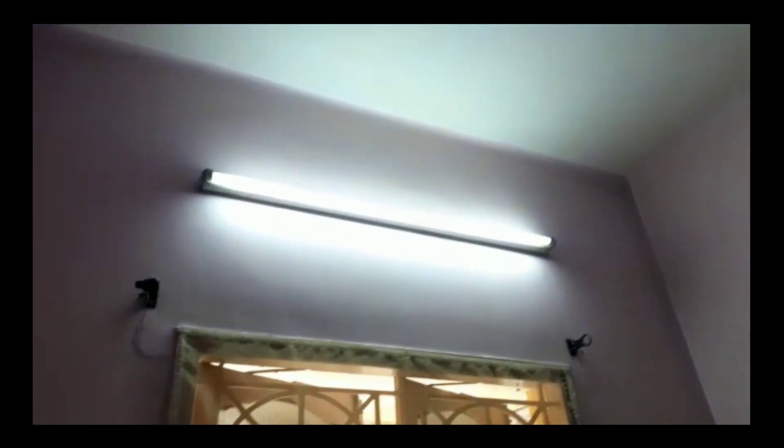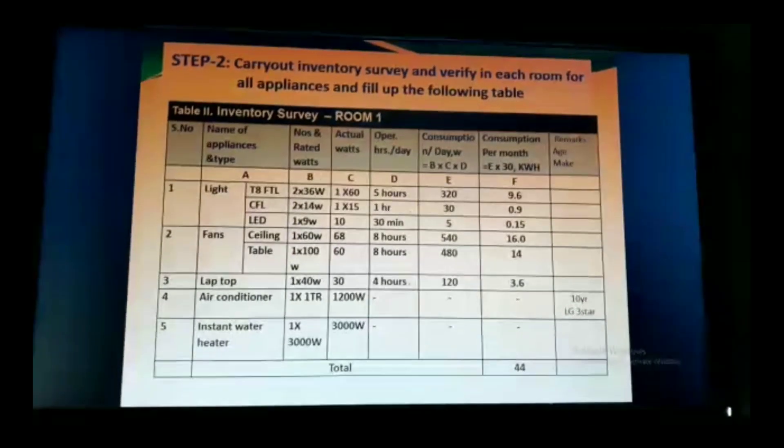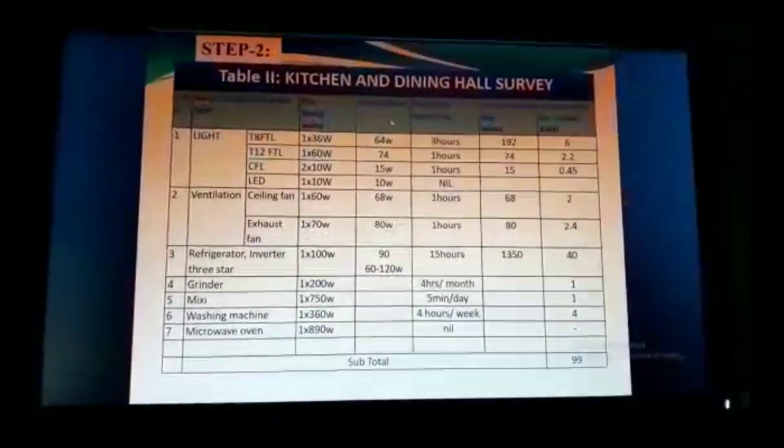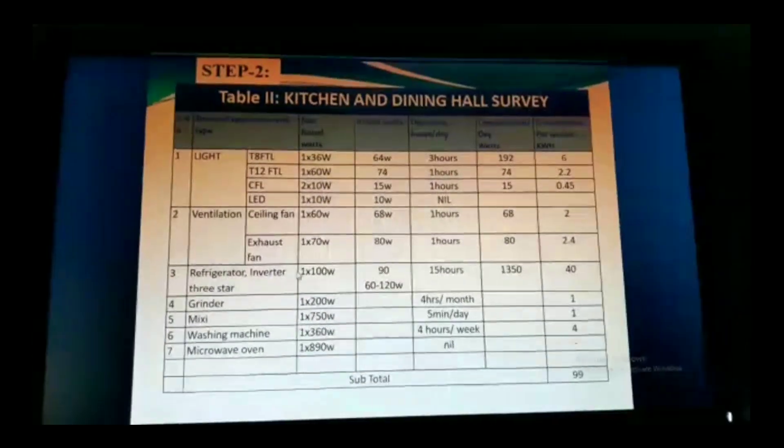In the dining room there is a newly installed 3-star Samsung 325-litre refrigerator, one T12 40-watt tube light, and one old fan that is 20 years old consuming about 80 watts. In one of the bathrooms there is a 15-litre capacity storage water heater with a 2 kW element, with the thermostat kept at the highest temperature since installation, plus one LED light. Fill up the appliance inventory for all rooms including kitchen and dining.